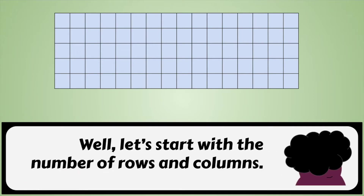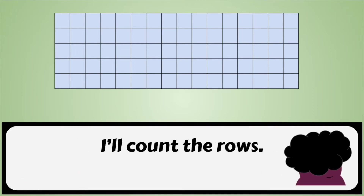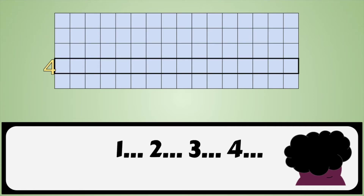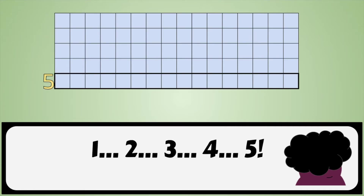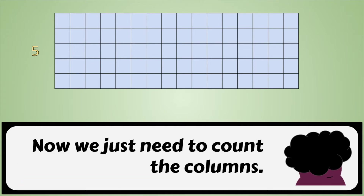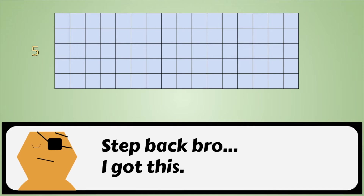Well, let's start with the number of rows and columns. I'll count the rows. One, two, three, four, five. Okay, we have five rows or groups. Now we just need to count the columns. Step back, bro.